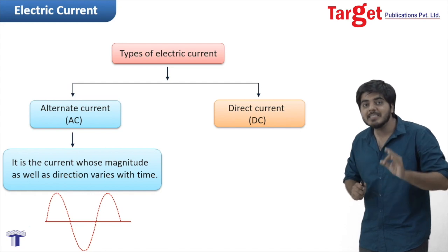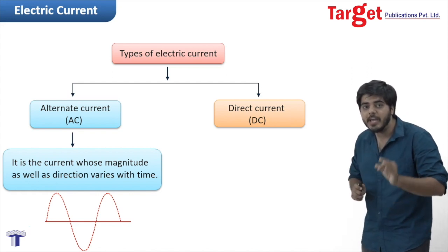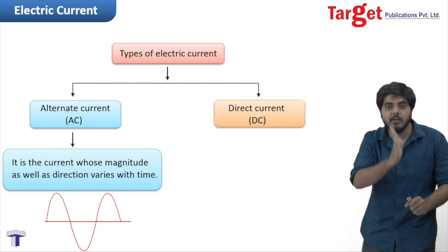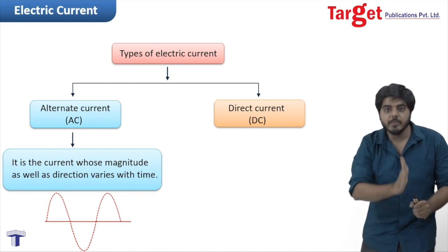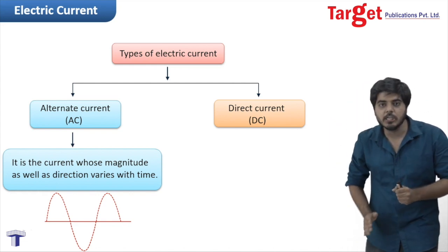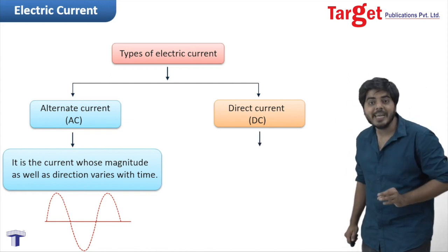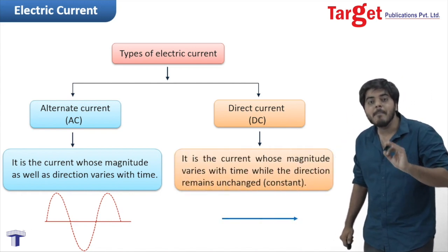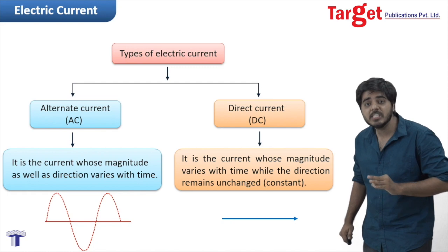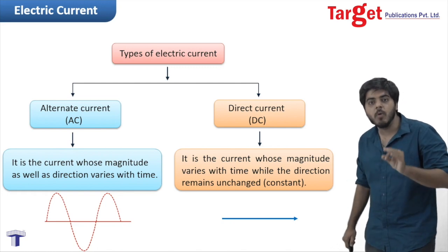Alternating current has both magnitude and direction changing with time. It can be shown by a sinusoidal wave — positive, negative, positive, negative — where both magnitude and direction change with respect to time. Such a current is called alternating current. Direct current is a current whose magnitude may change with time but direction remains constant — represented by a straight line. This type of current is called direct current.